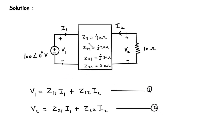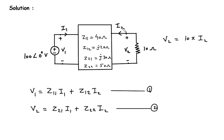The values for the Z parameters are given, and the value of V1 is also given. We can find V2 from the circuit: voltage equals current times resistance, so with resistance 10 and current I2. However, the direction of I2 is opposite to the polarity of V2, so V2 = -10·I2.